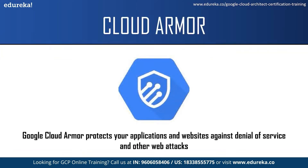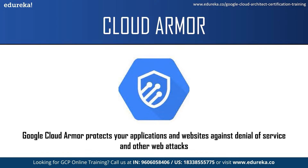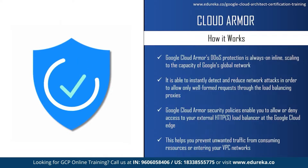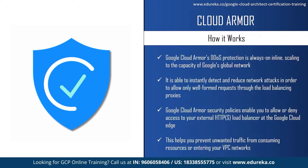Google Cloud Armor protects your applications and websites against denial of service and other web attacks. You can use Google Cloud Armor security policies to protect applications running behind a load balancer from distributed denial of service (DDoS) and other web-based attacks — whether your application is deployed on Google Cloud, in a hybrid deployment, or in a multi-cloud architecture. Cloud Armor's DDoS protection is always-on and inline, scaling to the capacity of Google's global network, instantly detecting and mitigating network attacks to allow only well-formed requests to load balancing proxies. With security policies, you can allow or deny access to your external HTTPS load balancer at the Google Cloud Edge, preventing unwanted traffic from consuming resources or entering your VPC network.